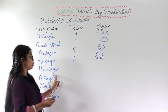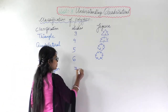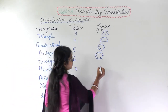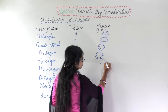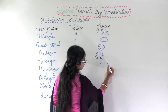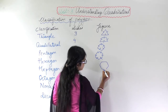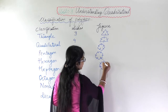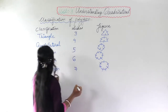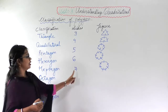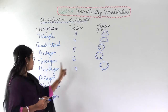Similarly, heptagon — 'hepta' means seven. So it will have one, two, three, four, five, six, seven sides. A heptagon has seven sides.